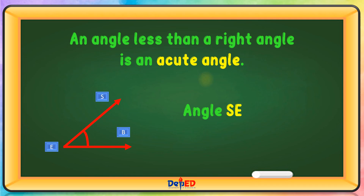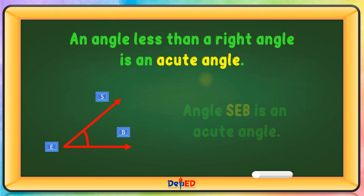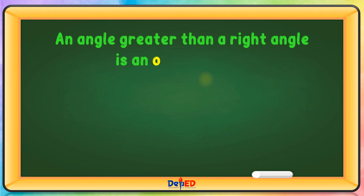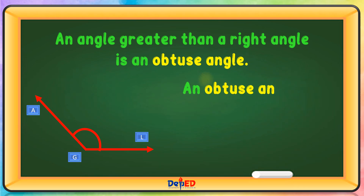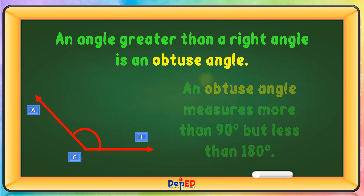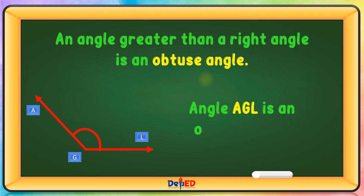Angle SEP is an acute angle. An angle greater than a right angle is an obtuse angle. An obtuse angle measures more than 90 degrees but less than 180 degrees. Angle AGL is an obtuse angle.